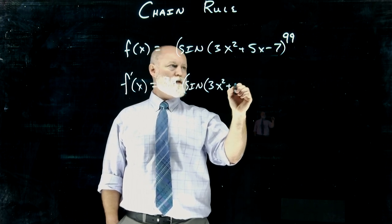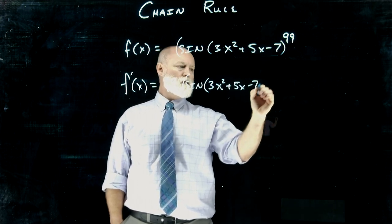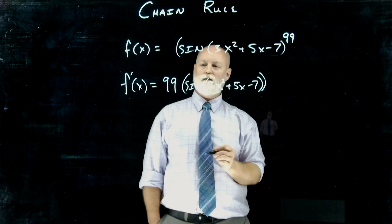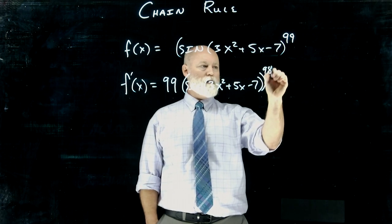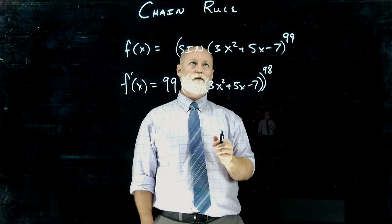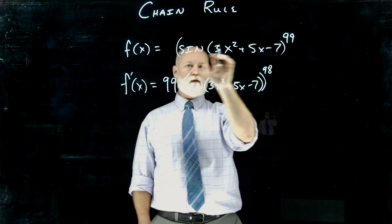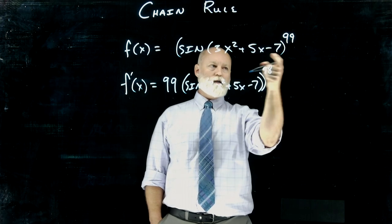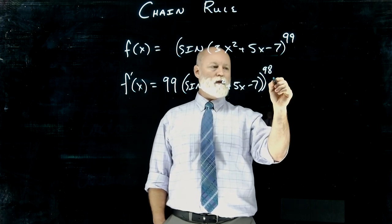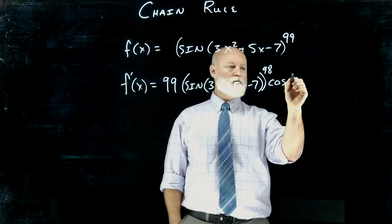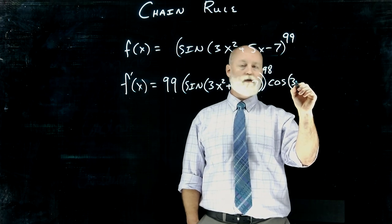So we would just repeat all the inner pieces inside there like that and then raise this to the 98th power. Then we have to do the derivative of the next function in. So we had something to the 99th power. Now we're doing sine of something and keep the same interior. So the derivative of the sine would be cosine of that original interior piece.